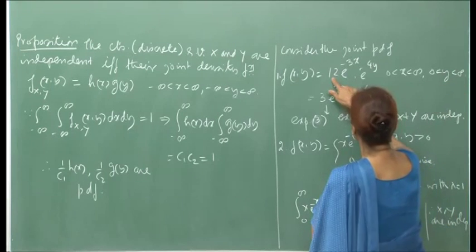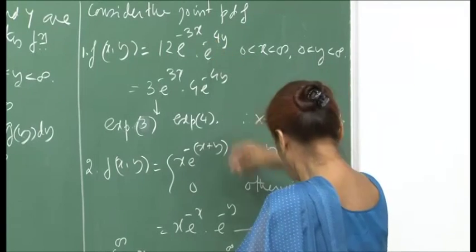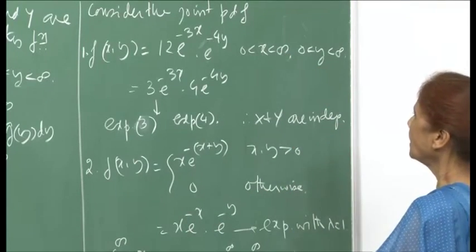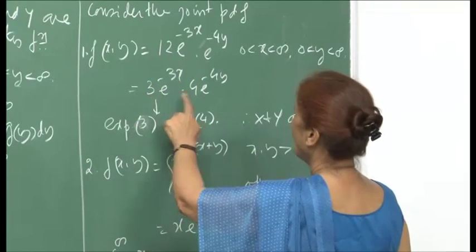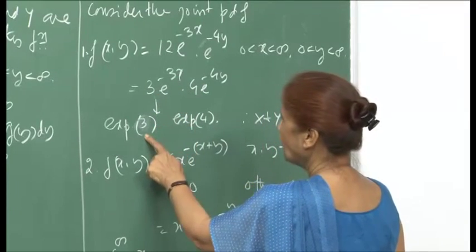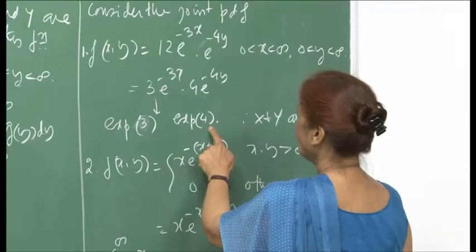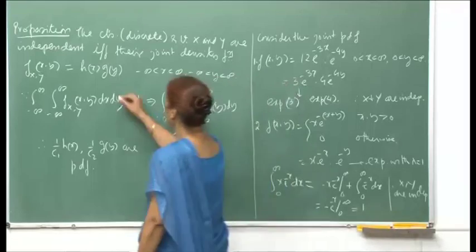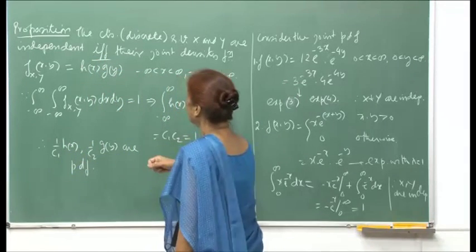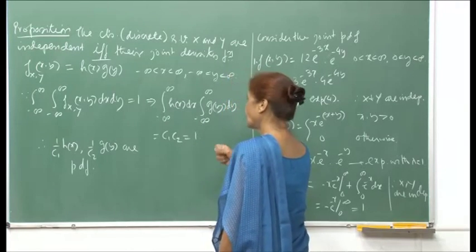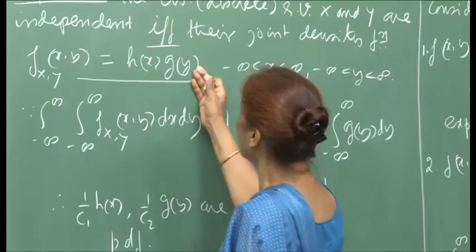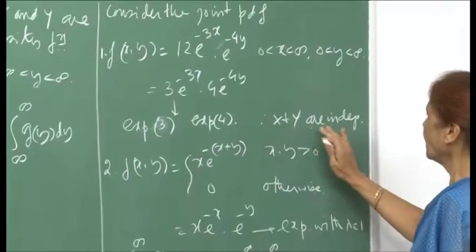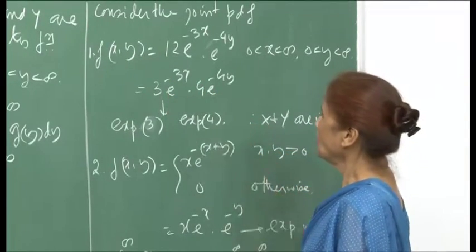For example, if the joint density is f(x, y) = 12·e^{−3x}·e^{−4y} for x, y ≥ 0, then multiplying by 3 and 4 respectively gives exponential PDFs with parameters 3 and 4. So x and y are independent. Similarly, f(x, y) = x·e^{−(x+y)} for x, y ≥ 0 can be written as x·e^{−x} times e^{−y}; the latter is exponential with λ=1, and one can verify by integration by parts that x·e^{−x} is also a valid PDF. Therefore x and y are independent.